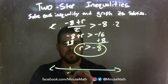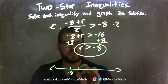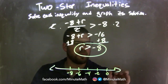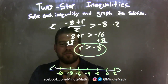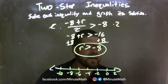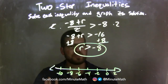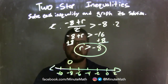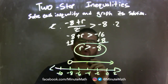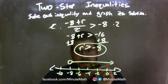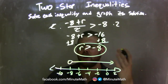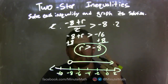Now I need to graph it. Let's put negative 8 here, going by 2s: negative 6, negative 4, negative 2, 0, positive 2, and negative 10. Since r is greater than negative 8 — not even equal to, just greater than — we have an open circle at negative 8. Then I shade to the right because r was greater than negative 8. Our graph now matches our inequality, which is r is greater than negative 8.